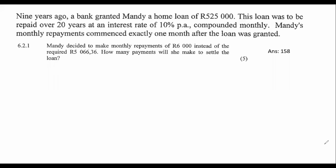If Mandy wanted to pay her loan off in 20 years, she was told by the bank to pay 5,066 Rand. So that would have taken her 20 years, which is 20 times 12, which is 240 months. That's how long Mandy would have taken to pay back her loan.